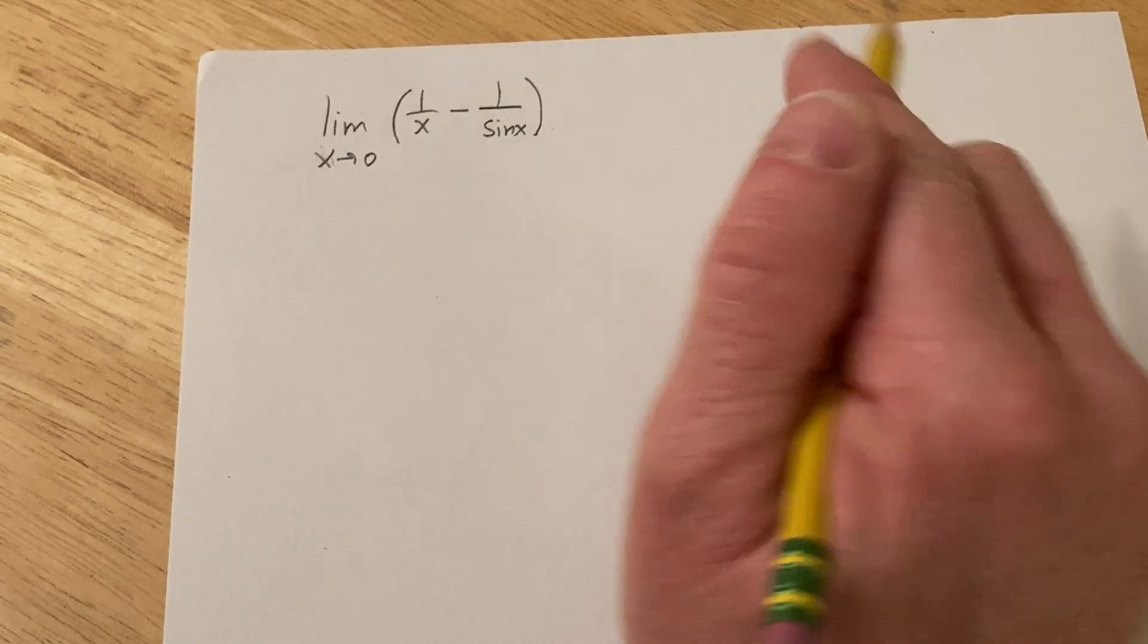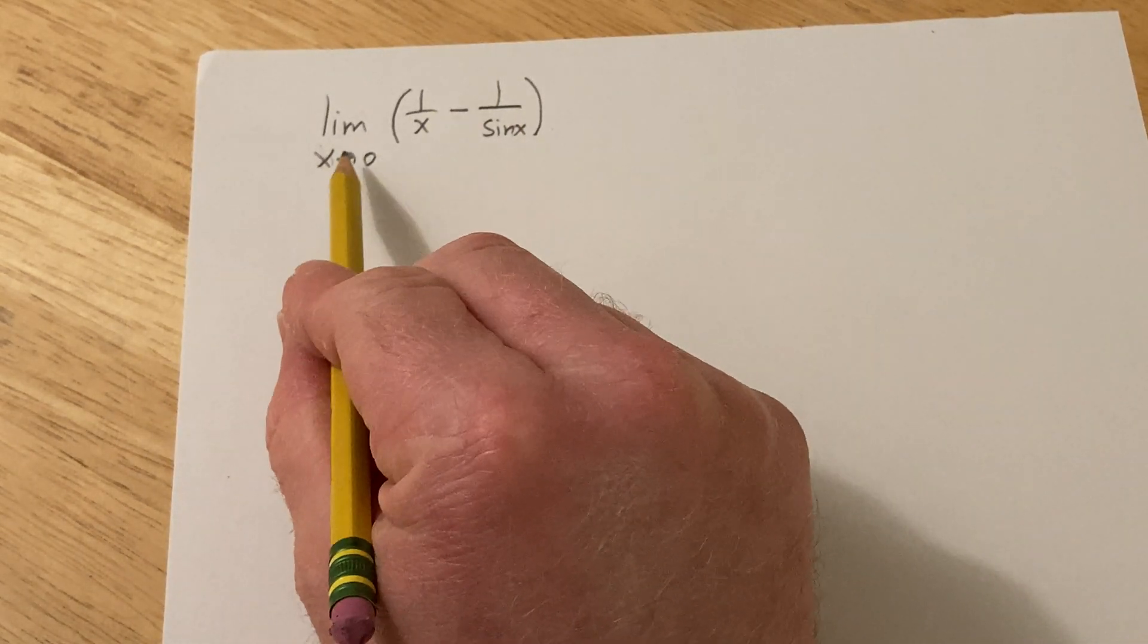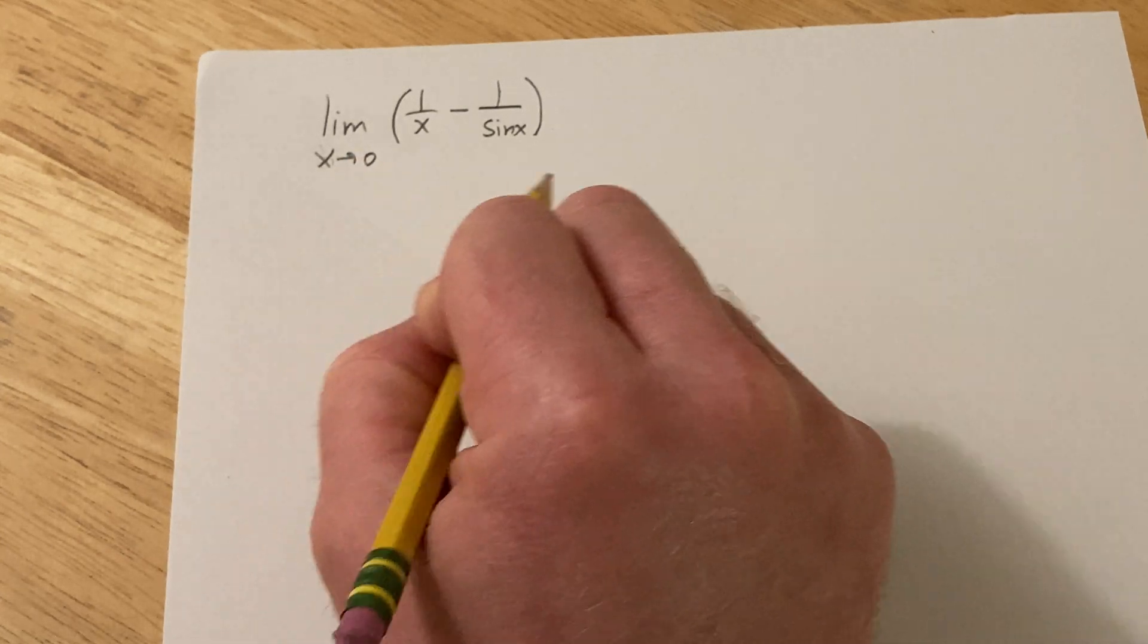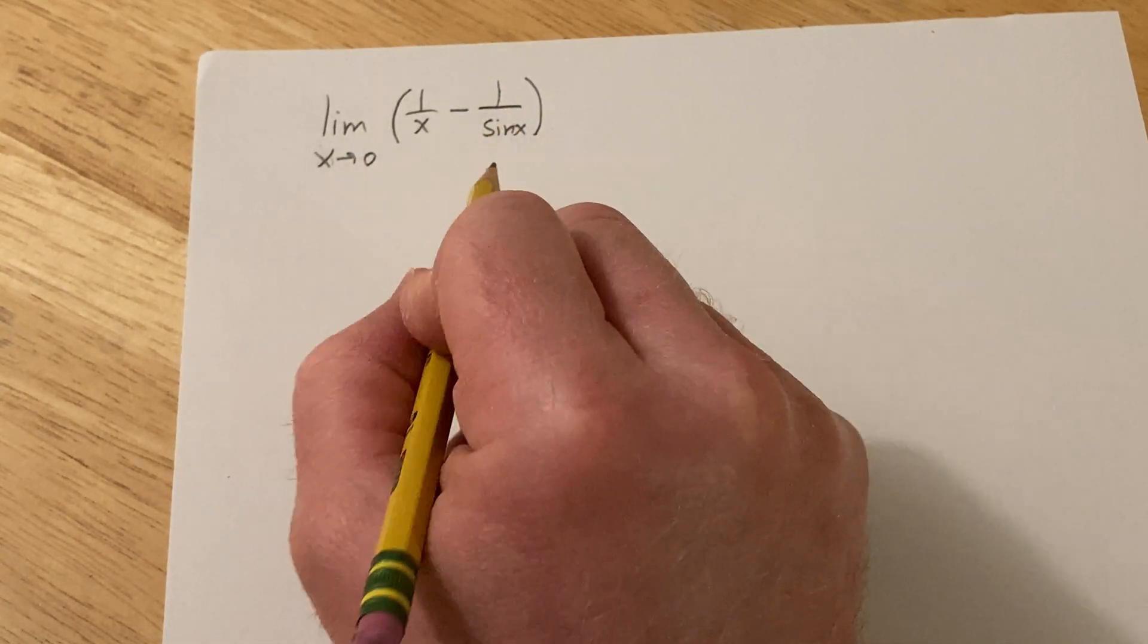Hello, in this problem we are going to find this limit. We're taking the limit as x approaches 0 of 1 over x minus 1 over sin x.